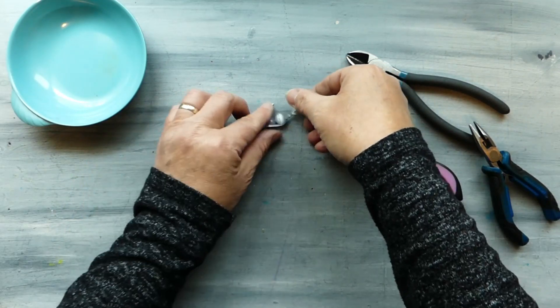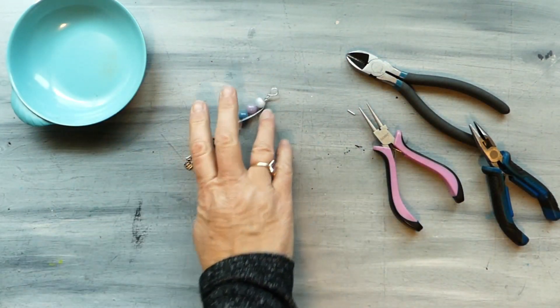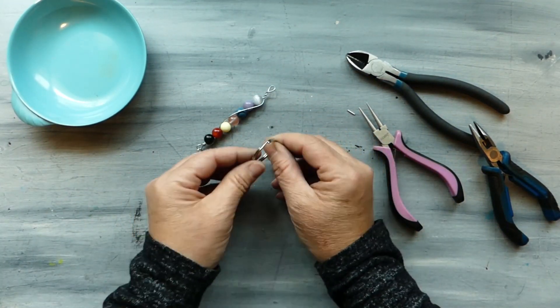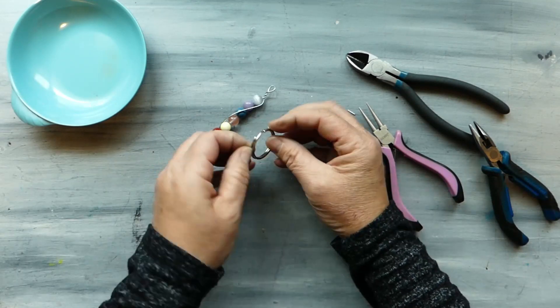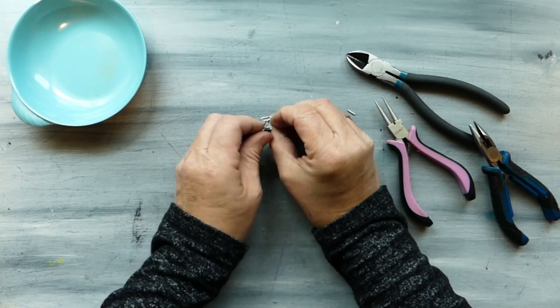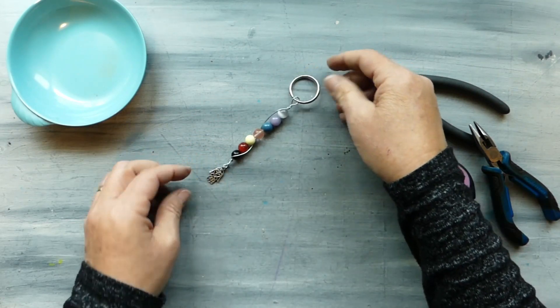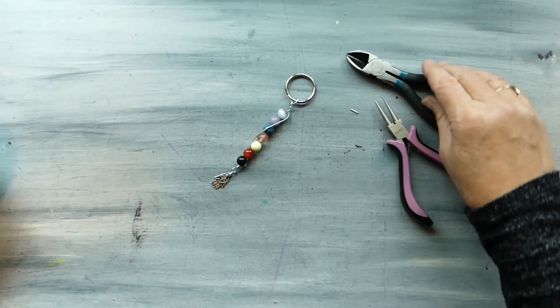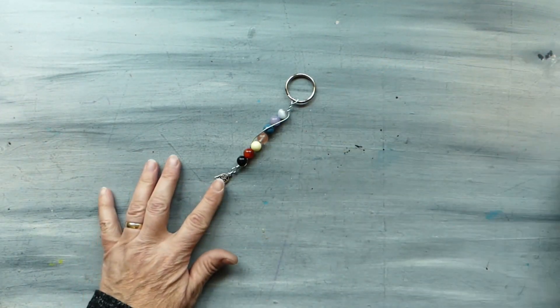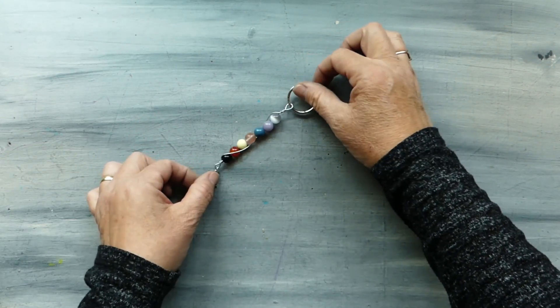Okay so there's that part of it and then we just take a purchased key ring and we just thread this onto the end of it. And there you go there's our lovely little chakra keychain.